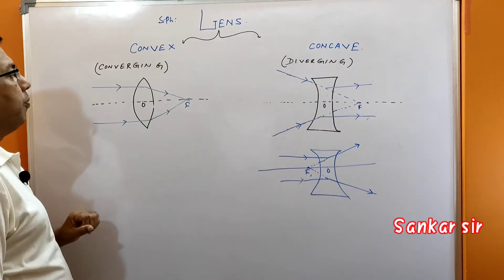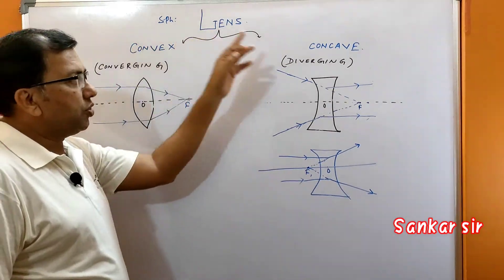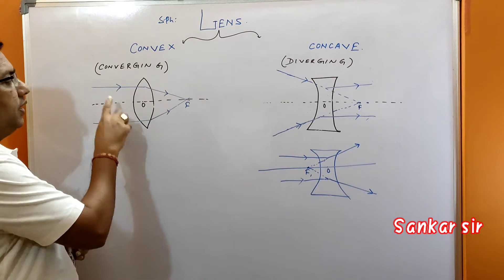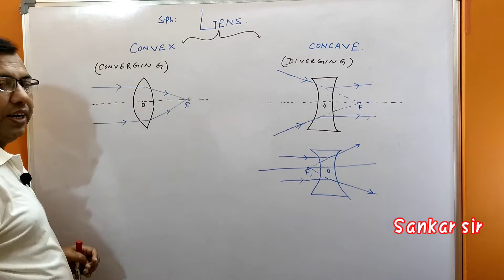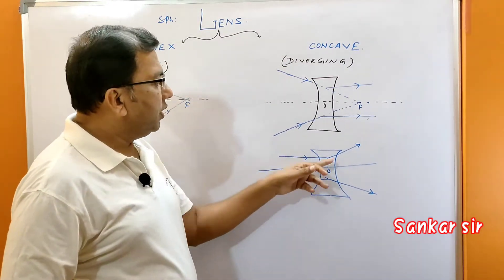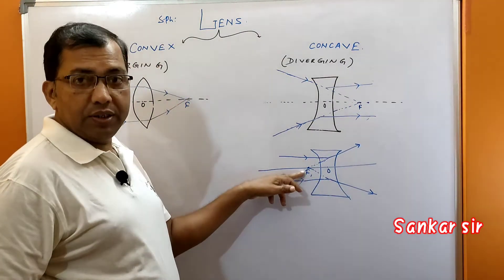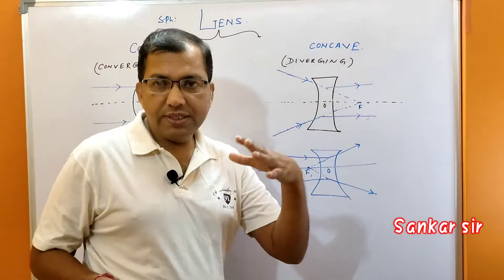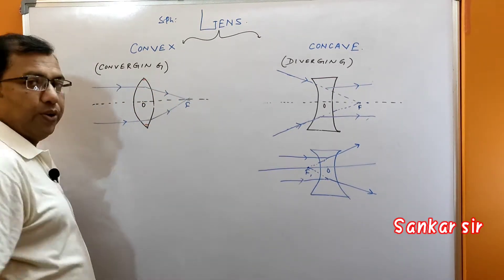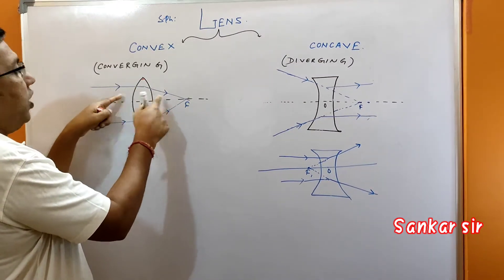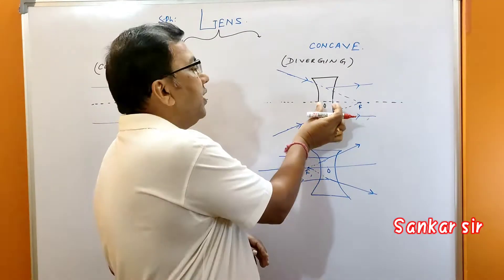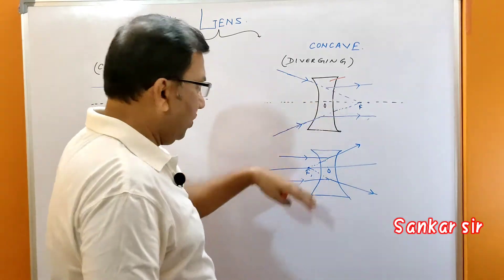What is a convex lens? It is also called the converging lens. A concave lens is also called the diverging lens. In the case of a convex lens, the parallel rays of light along the principal axis converge at a particular point called the focus — that's why it's called the converging lens. In the case of a concave lens, the parallel rays diverge and appear to meet at a focus — that's the diverging lens. The physical difference: in a convex lens, the two end parts are thin and the middle part is thick. In a concave lens, the middle part is thin and the two end parts are thick.